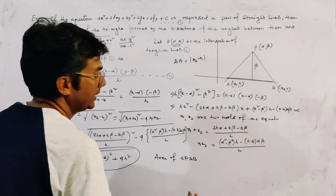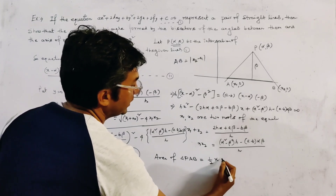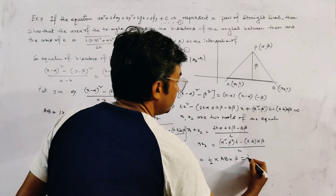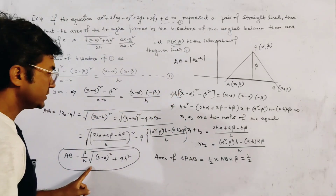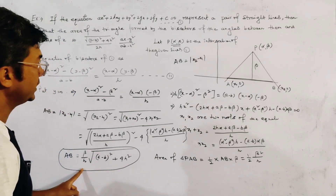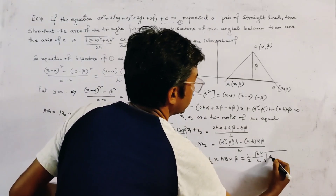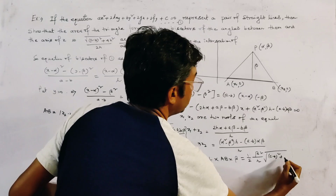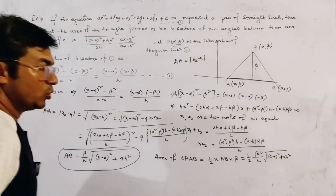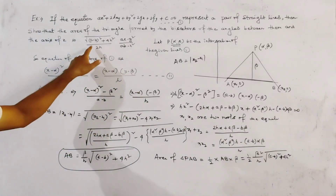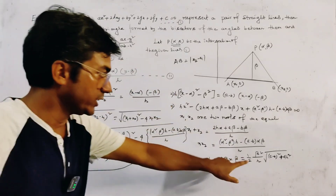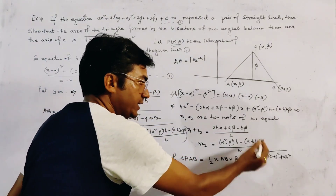So the area of triangle PAB is: Area = ½ × AB × altitude = ½ × (β/h)·√[(a−b)² + 4h²] × β = β²/h · √[(a−b)² + 4h²] / 2. We now have the expression √[(a−b)² + 4h²] / (2h), and we only need to find β².